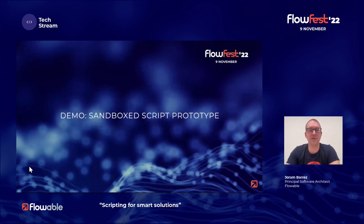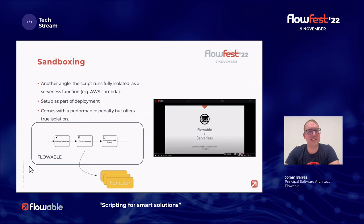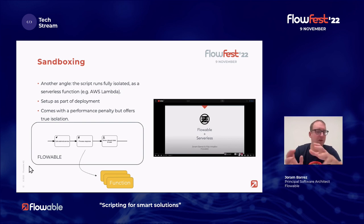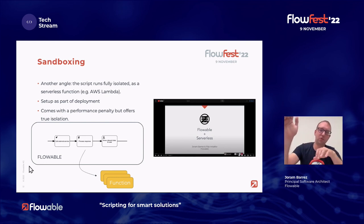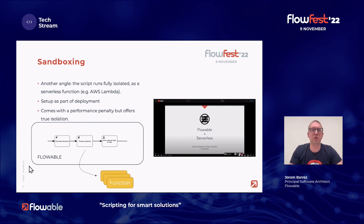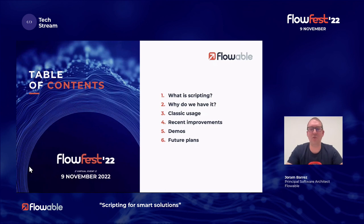The last slide: another thing we're looking into is a very different approach. Instead of sandboxing locally, why not deploy a Lambda to AWS or Azure on the fly when deploying your process or case — compile a Lambda, post it to AWS, and call that Lambda whenever reaching that particular point in the process. Of course there are huge implications due to network latency and performance won't be the same as doing it locally, but you get true isolation — each serverless function is really isolated from the others. We talked about scripting, why we have it, did a demo, and that's what I had to share.